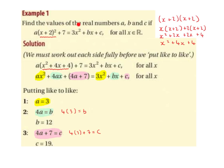Find the values of the real numbers a, b, and c if a times (x plus 2) squared plus 7 is equal to 3x squared plus bx plus c, for all x values that are elements of the real number set. What we're going to do is multiply out any brackets that we have and then put like to like.